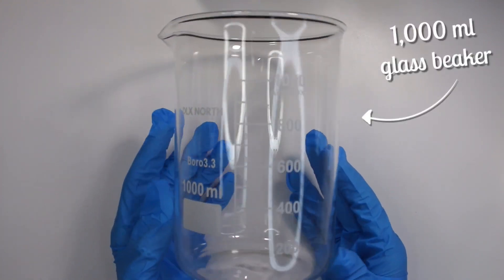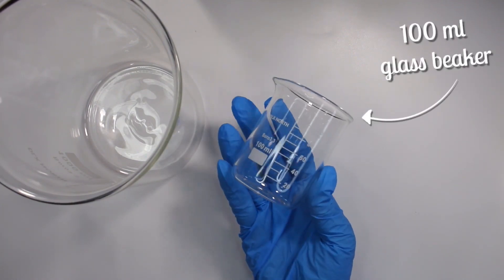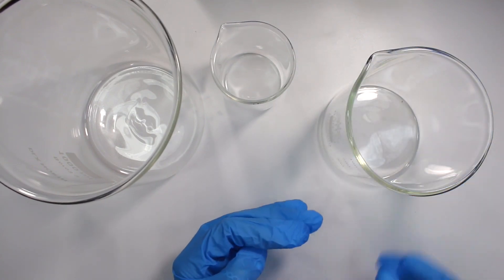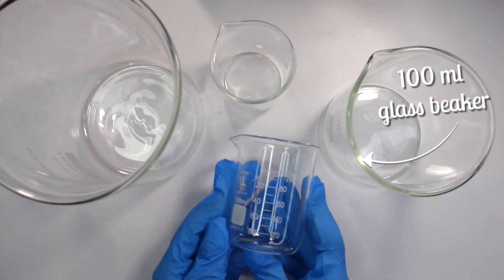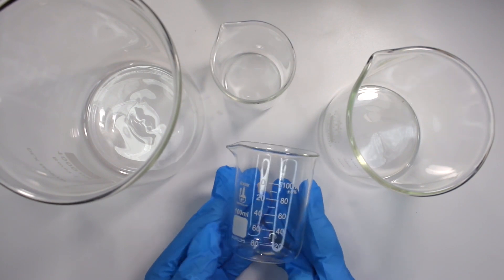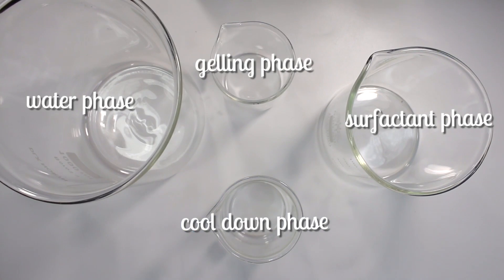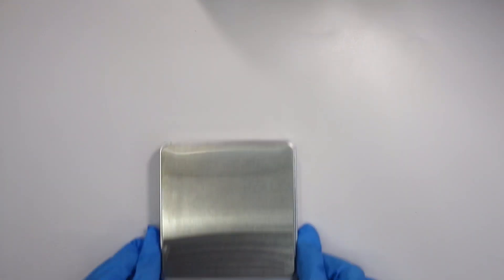So first I start out with a 1000ml glass beaker, a 100ml glass beaker, a 400ml glass beaker, and then another 100ml glass beaker. And I use all these beakers for different phases. So I can individually weigh out each phase into a different beaker and you can see on the screen here which beaker is for which phase.